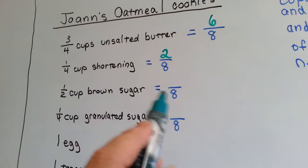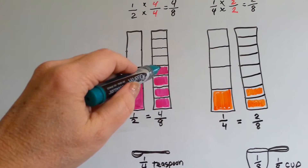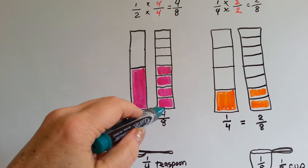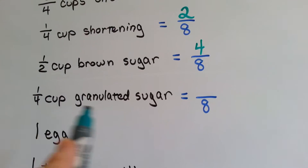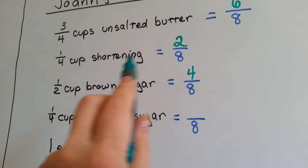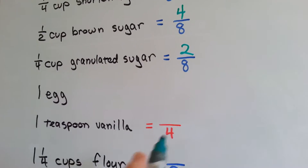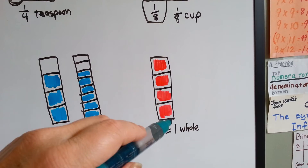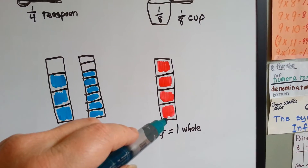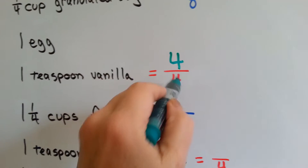We need a half a cup of brown sugar — how many eighth cups is that? A half a cup is equal to four-eighths, so we need four-eighths. We need a fourth of a cup of granulated sugar — we know that's two-eighths. You need to throw in an egg. We need one teaspoon of vanilla, but we only have a one-fourth teaspoon measure. If it's split into four parts and you've got four-fourths, you've got one whole — so we need four-fourths, meaning four of these little one-fourth measuring spoons.